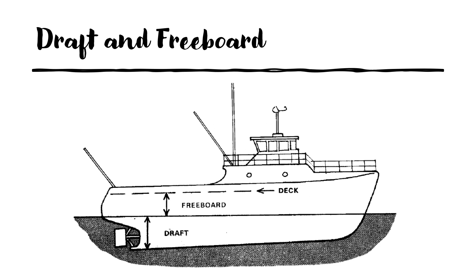Then we have draft. Draft relates to the depth of water required for a vessel to float freely, and it is measured vertically from the underside of the keel to the waterline, as you can see in the picture here. Freeboard, on the other hand, is the vertical distance measured from the waterline to the lowest point of the main deck — something we call the deck line. So that is also a vertical distance, but measured from the waterline to the deck line.